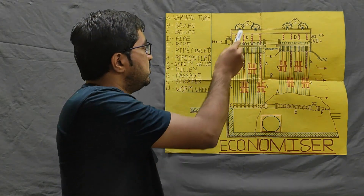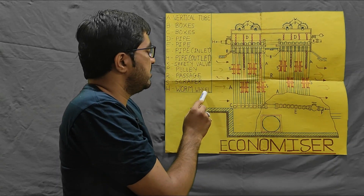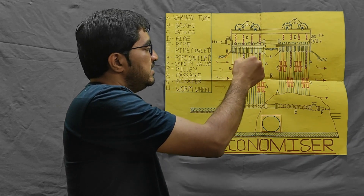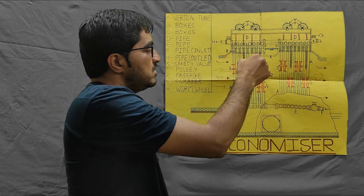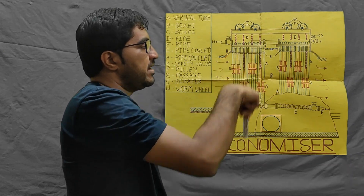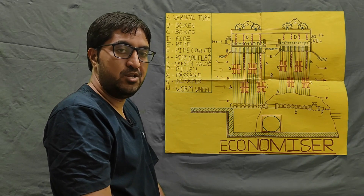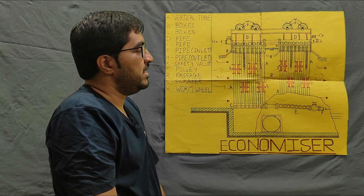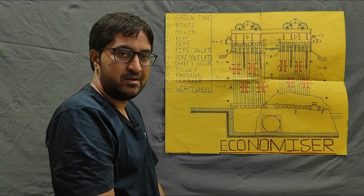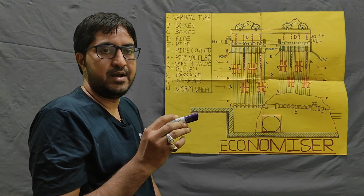Here you can see the pulley — 'W' means it is a worm wheel. The pulleys and worm wheels are connected with chains, and these chains are connected with the scraper. The scraper slides up and down to remove the carbon layer that precipitates on the surface of the tubes, which increases the heat transfer rate.